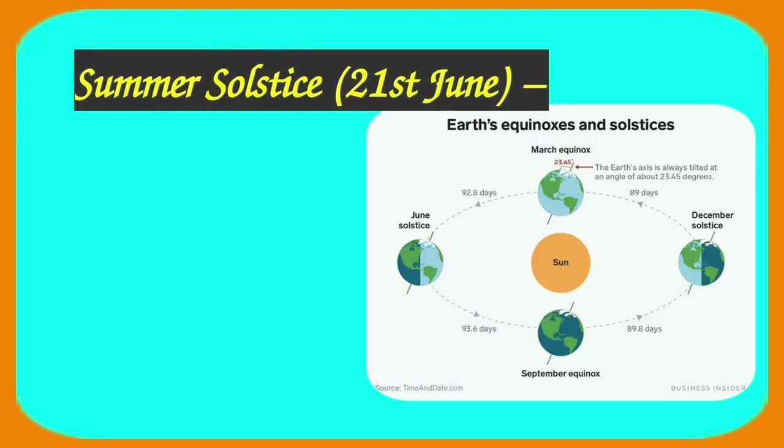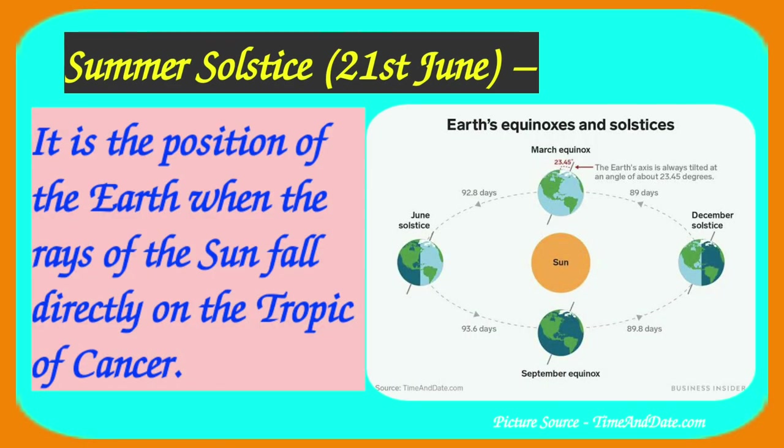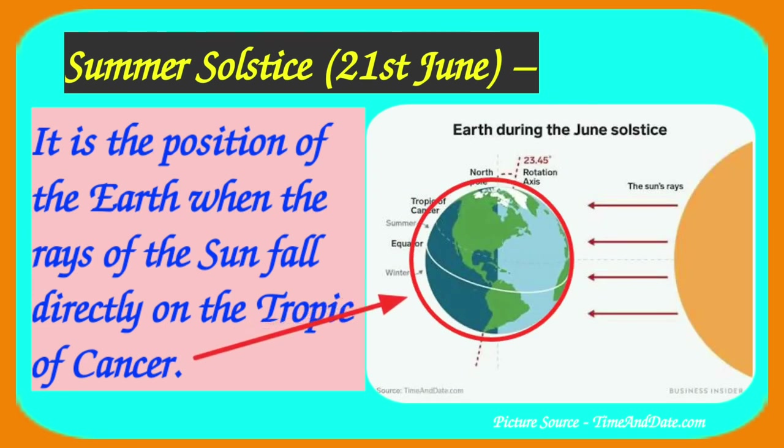Summer solstice occurs on 21st June. It is the position of the earth when the rays of the sun fall directly on the Tropic of Cancer. As a result, the northern hemisphere experiences the longest day and the shortest night.